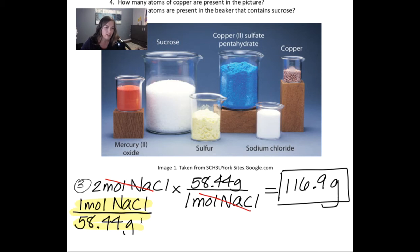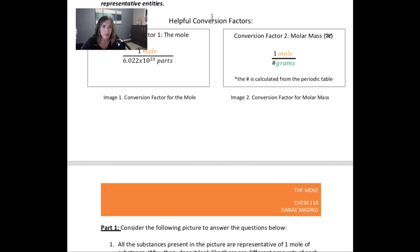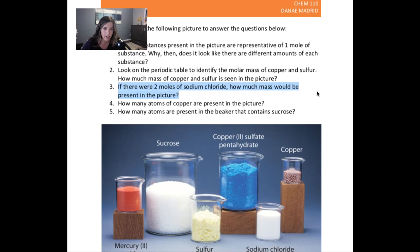So this gives me about 116.9 grams of sodium chloride. Now I just highlighted this right here to show you this is what's called my conversion factor. So if you scroll up to the top again, remember I gave you conversion factors, that's this conversion factor right here, mole per grams. And remember the number that you get for grams is calculated from the periodic table.